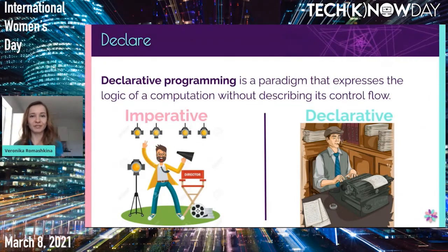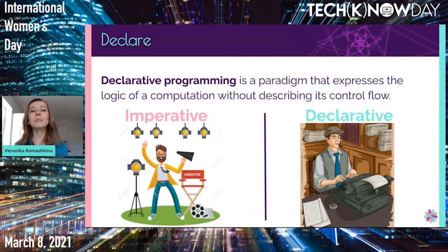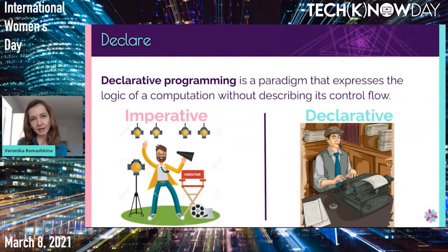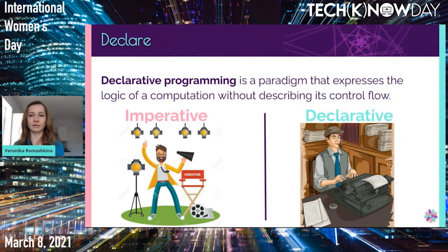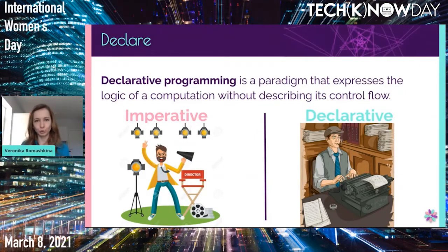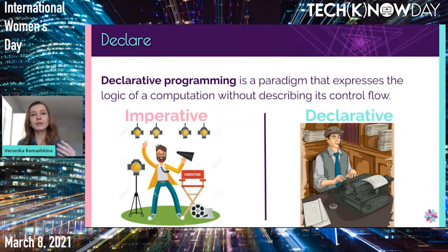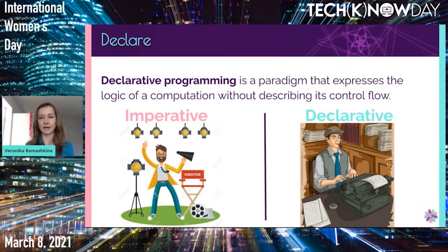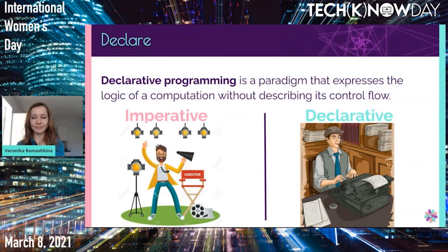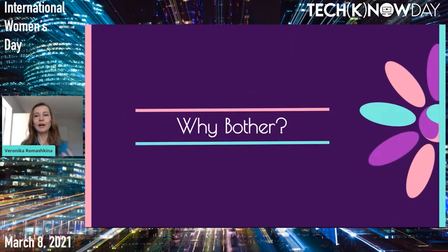If talking about functions and programming, a more visible example is when you need to filter a list. In declarative programming you say: take this list and give me only the even elements. And it will do that. In imperative, you actually need to say how to do it — you specify what to do with each element inside. So as you see, these two paradigms are very different in many ways.